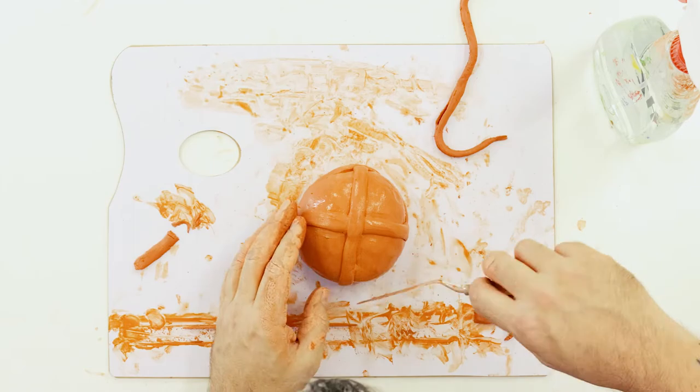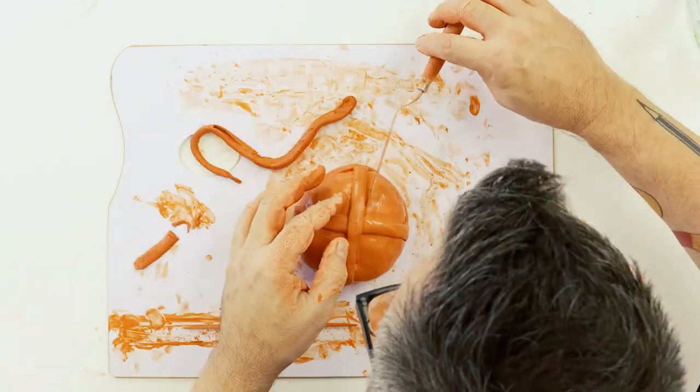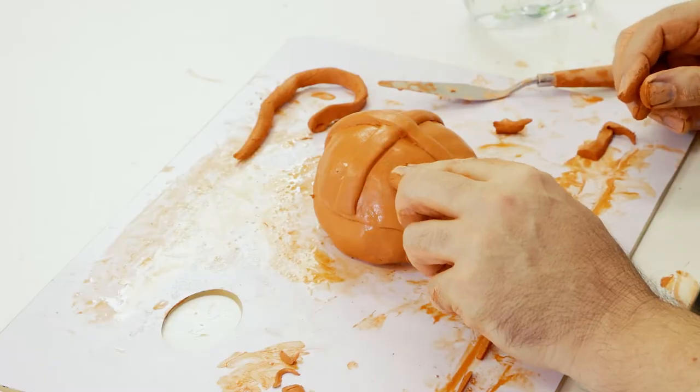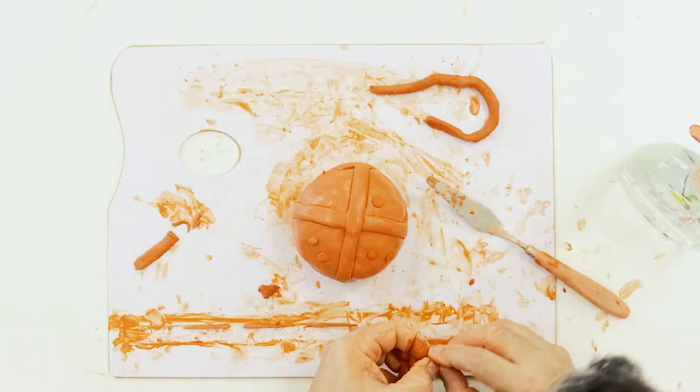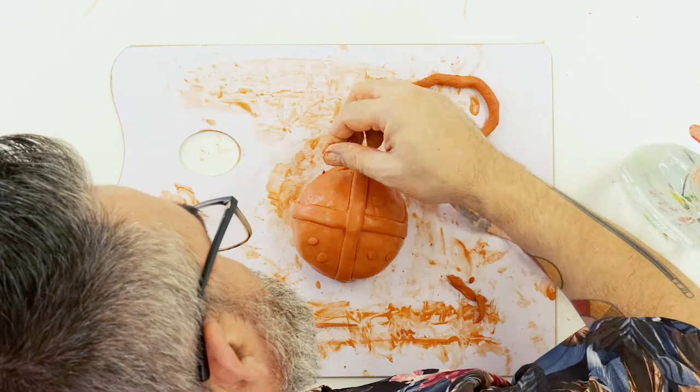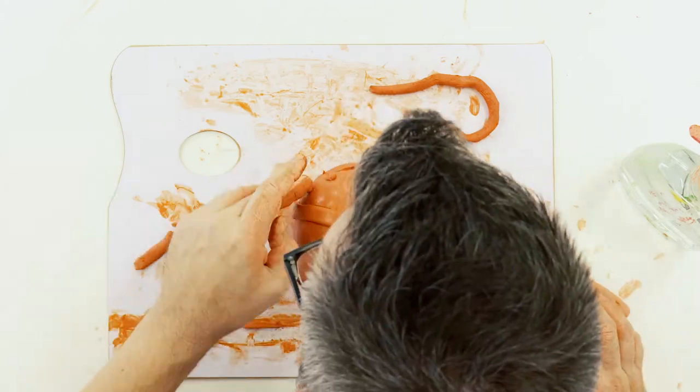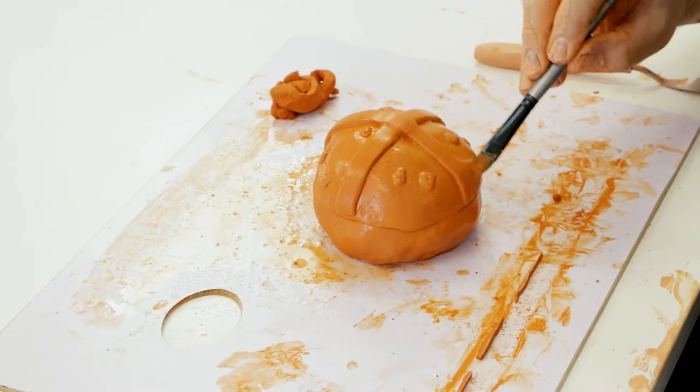Hot cross buns traditionally have raisins and sultanas in them so to suggest some protruding from the surface we create some little balls and press them onto the surface. Then smooth it all off with a damp brush. Allow this to partially dry.